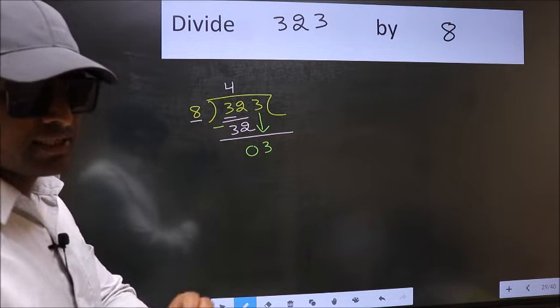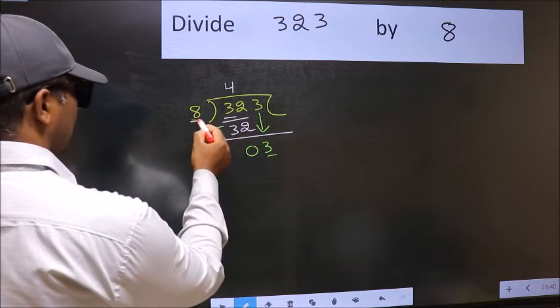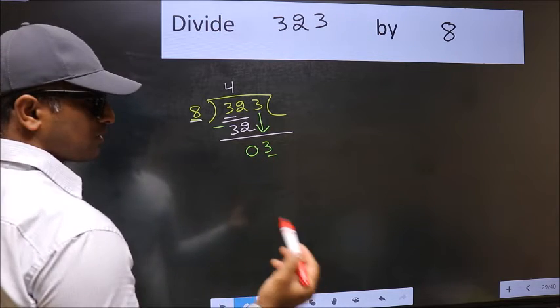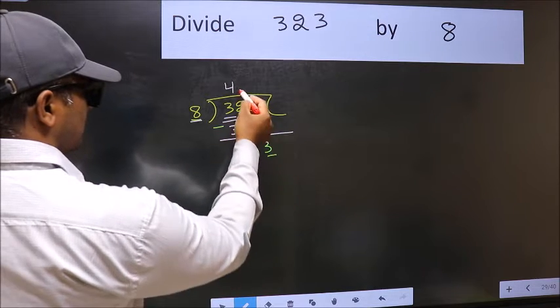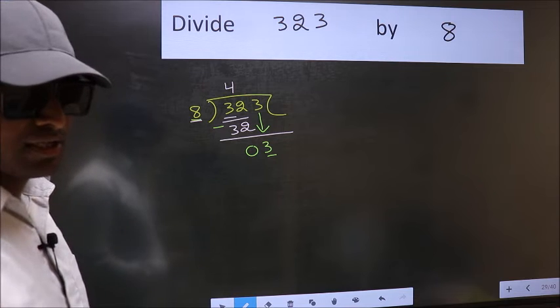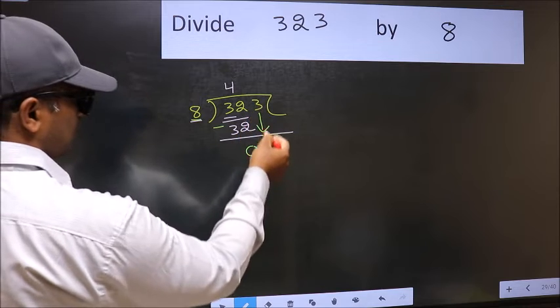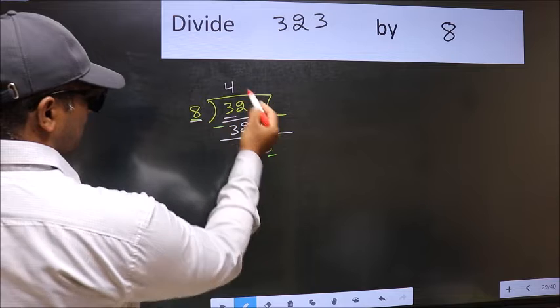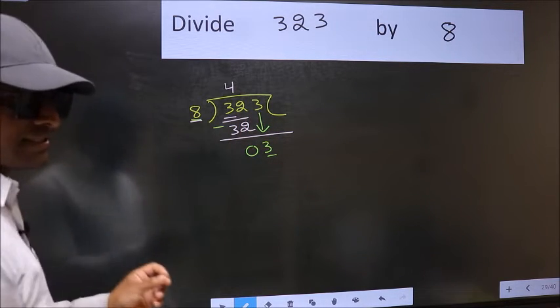And the mistake is this. Here we have 3 and here 8. 3 is smaller than 8, so what many do is they directly put dot and take 0, which is wrong. Why is it wrong? Because just now you brought this number down, and in the same step you want to put dot and take 0, which is wrong.